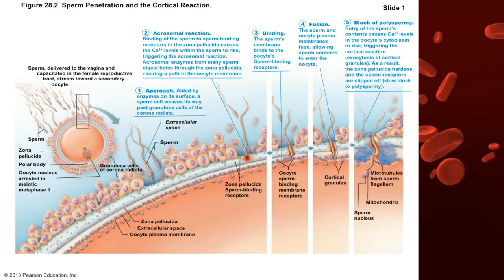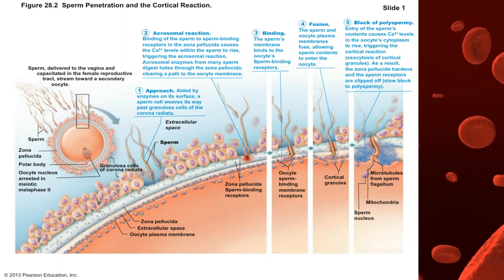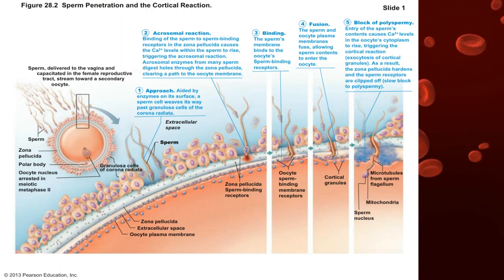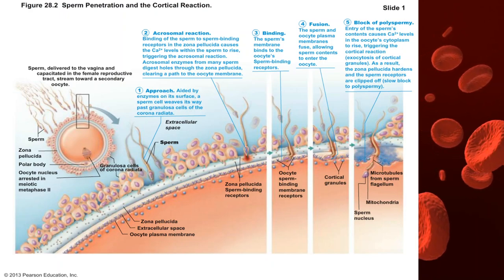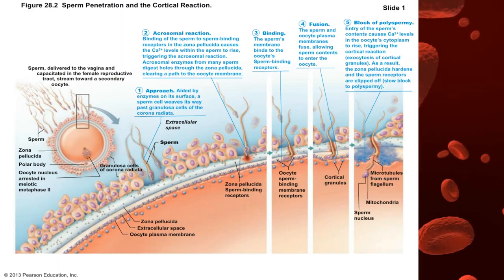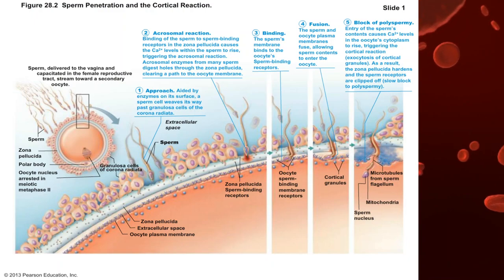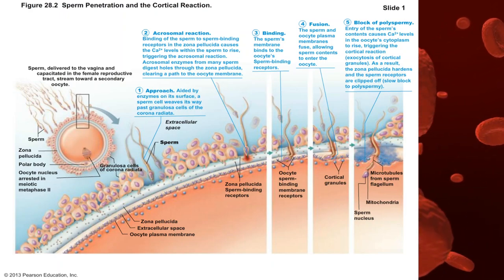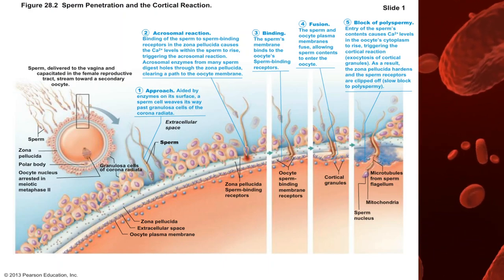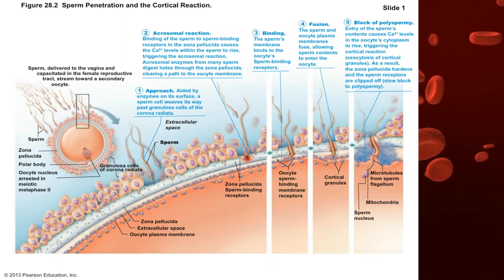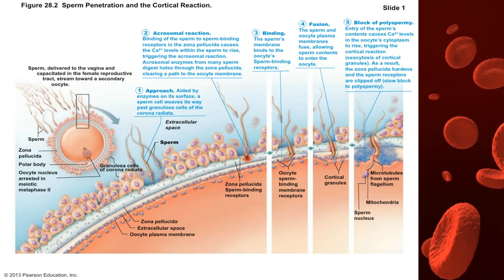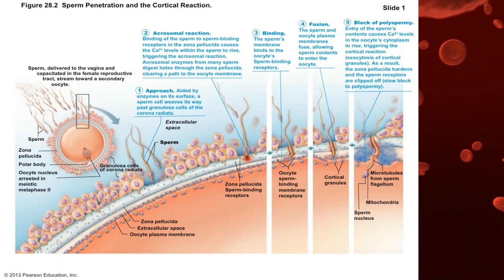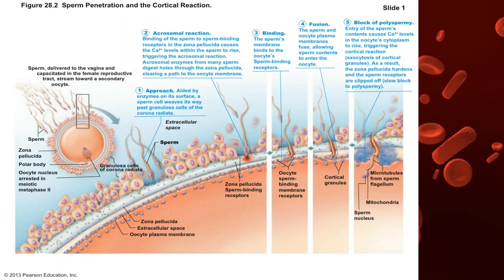In summary, the steps for sperm to fertilize an ovulated oocyte are: capacitation (becoming more motile with outer membranes weakened), approach using chemical cues, penetration past the corona radiata and zona pellucida via hydrolytic enzymes, binding of the spermatozoa nucleus to the oocyte nucleus, fusion, and then initiation of both blocks to polyspermy — the fast cortical reaction and the slow hardening of the zona pellucida.